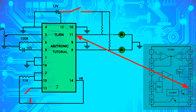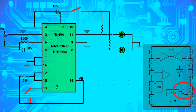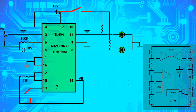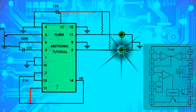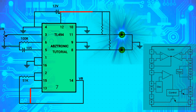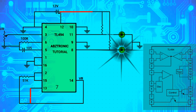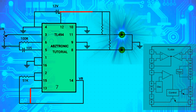Pin 10 and pin 11 are the collector and emitter of transistor 2. Pin 12 is the VCC. Pin 13 is the output control, and pin 14 is the voltage reference with a maximum voltage of 5 volts output. The TL494 has two outputs with a pulse-width modulation signal.